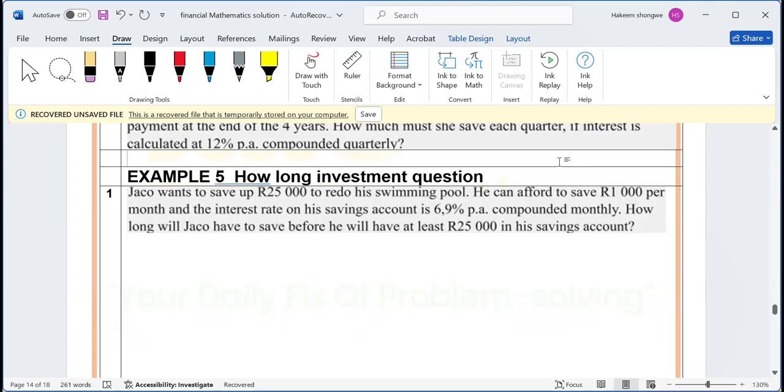We're saying they can either ask us how long or they can ask us number of payments. Number of payments, you stop at N. For how long, you need to divide - divide by 12 if they said compounded monthly, divide by 4 if they said compounded quarterly.